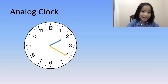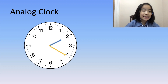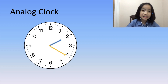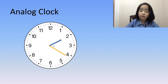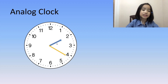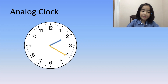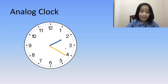Here is an analog clock face. It is marked with 12 numbers, 1 to 12. There are two hands. The shorter blue hand I am pointing to right now is called the hour hand. And the longer yellow hand I am pointing to is called the minute hand.